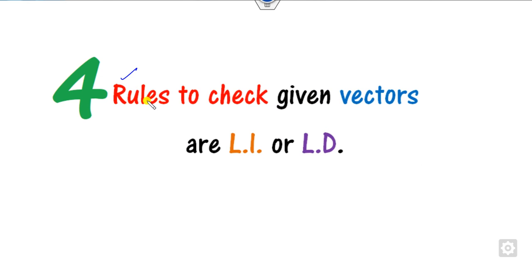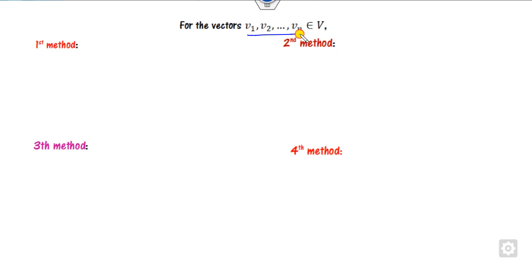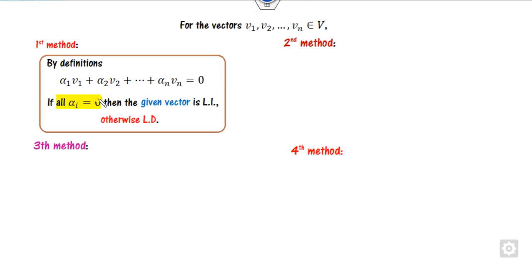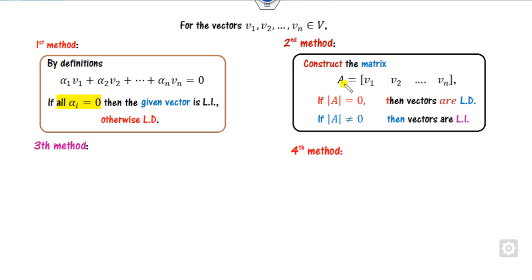We will discuss four different methods to check whether vectors are LI or LD. Consider vectors v1, v2, ..., vn from vector space V. The first method: find all alpha_i's — if all are zero, it is LI, otherwise LD. The second method: construct matrix A with each vector as a column; if the determinant is zero, it is LD, otherwise LI.